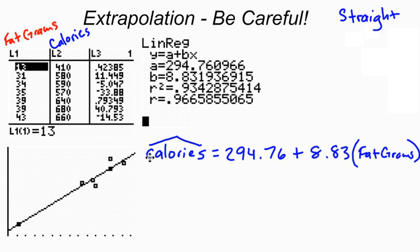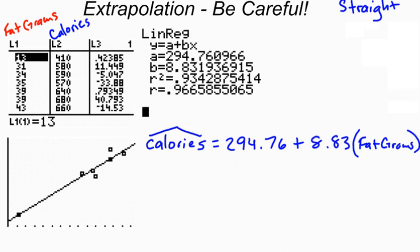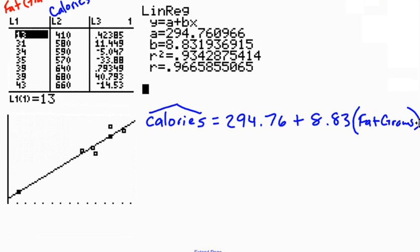So here is my least squared regression line, or my line of best fit. That's the equation for it when I write it in the context of this situation. So I can make predictions. That's part of the reason why we find this line of best fit, to make predictions.